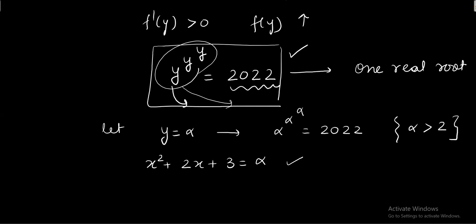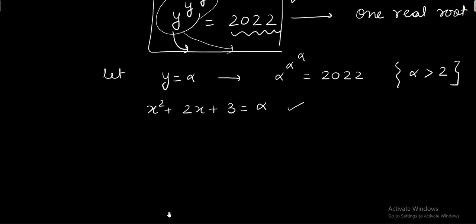But wait, do we need the individual values of x or we just need the sum of the values of x? Because we need only the sum of values of x, I will not be wasting time in calculating individual values of x. What I'm going to do is I'll rewrite my equation and just check whether this equation will have some real root. That's why I'll check its discriminant. Discriminant turns out to be b squared minus 4ac, and since alpha is greater than 2, you will find that discriminant d also turns out to be greater than 0.